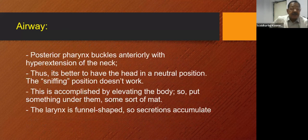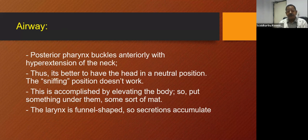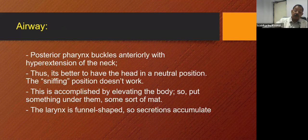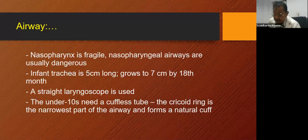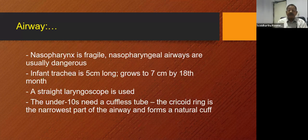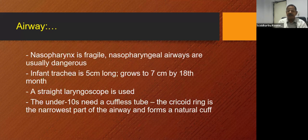The posterior pharynx buckles anteriorly with hyperextension of the neck. Thus, it is better to have the head in a neutral position — the so-called sniffing position does not work. This is accomplished by elevating the body by putting something under the shoulders downward, not below the head. The larynx is funnel-shaped, so secretions tend to accumulate. The nasopharynx is fragile, so nasopharyngeal airways and nasal gastric tubes or nasal intubation should be handled with caution. Infant trachea is 5 cm long, growing to 7 cm by 18 months. A straight laryngoscope is used for smaller children. Under-tens usually need a cuffless tube, as the cricoid ring is the narrowest part of the airway and forms a natural cuff.